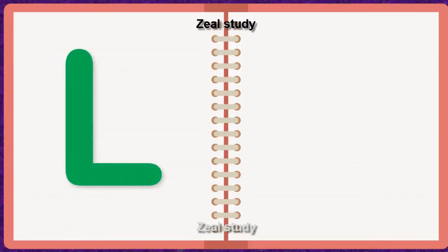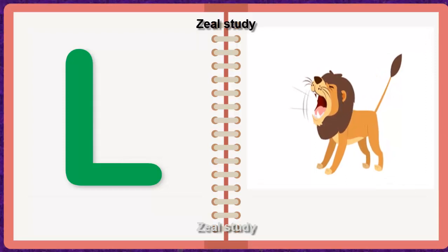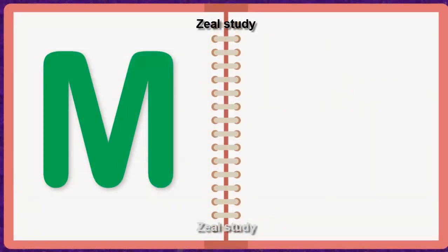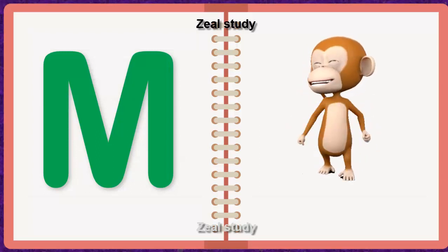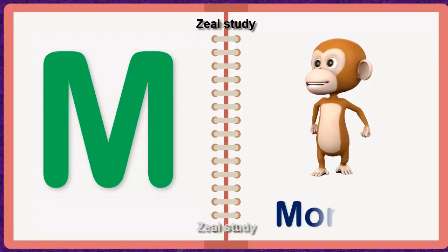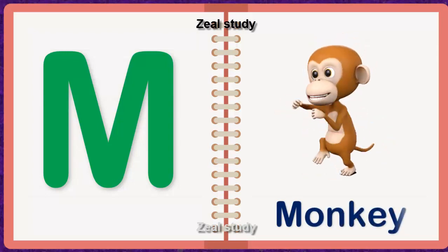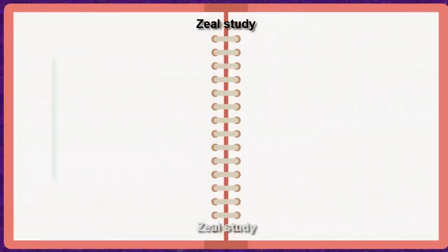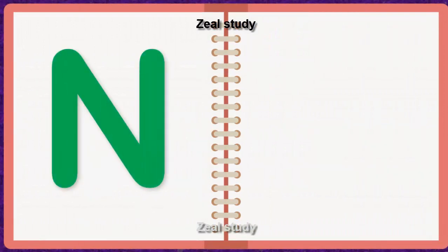L for Lion. L, I, O, N. Lion. M for Monkey. M, O, N, K, E, Y. Monkey. N for